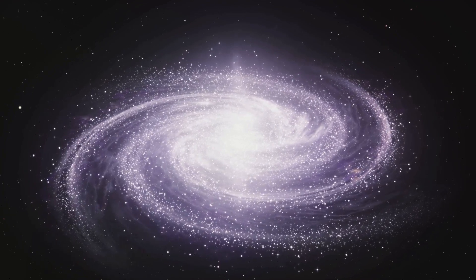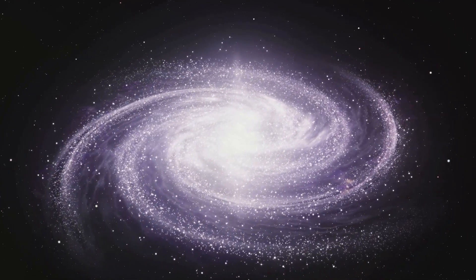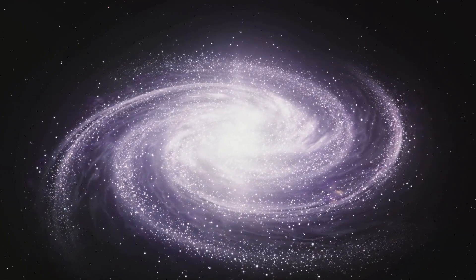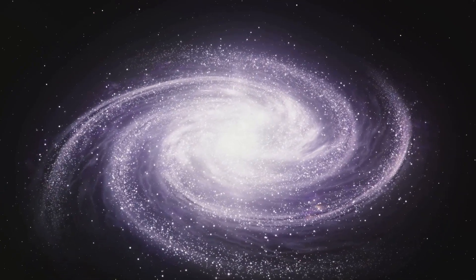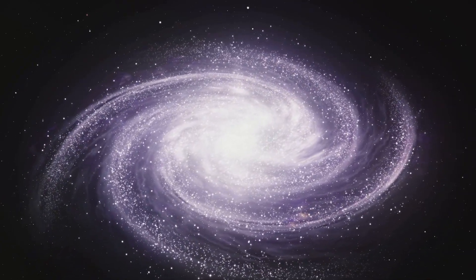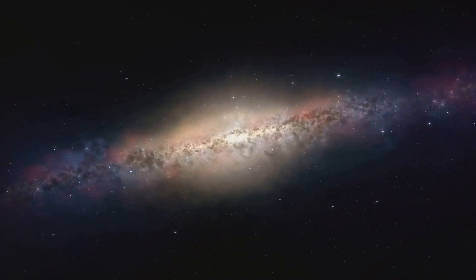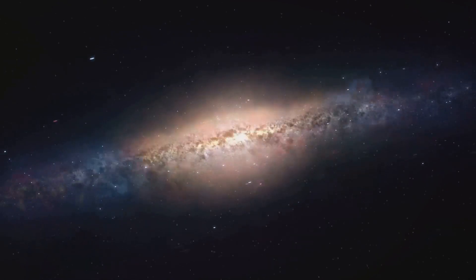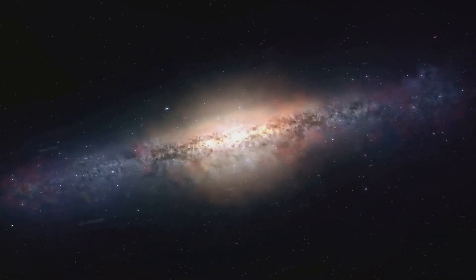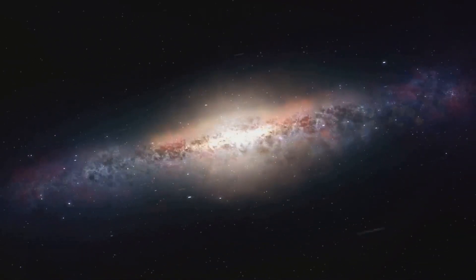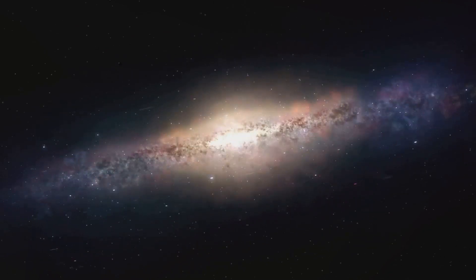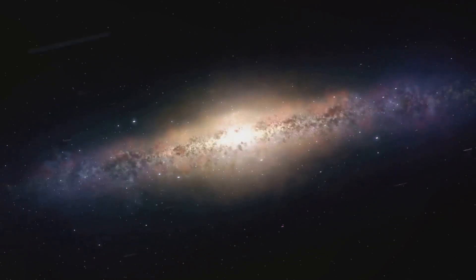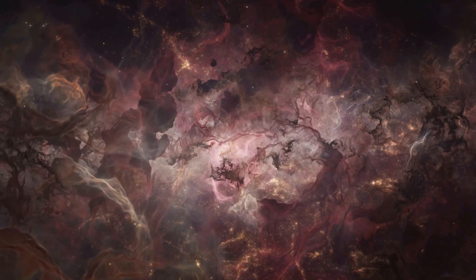Another clue comes from the way galaxies spin. When we observe galaxies, we see that their edges rotate at nearly the same speed as their centers. Now, this is strange because, according to the laws of physics, the stars at the edges should move slower due to less gravitational pull. But they don't. It's as if something unseen is holding them in place, preventing them from flying off into space. That unseen something? You've guessed it. Dark matter.